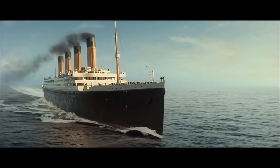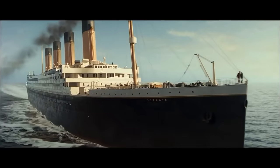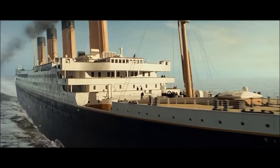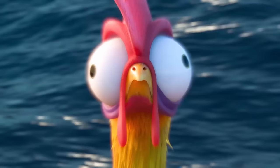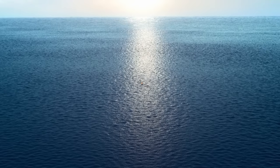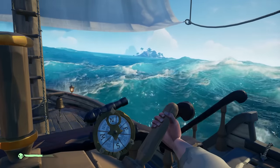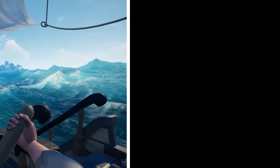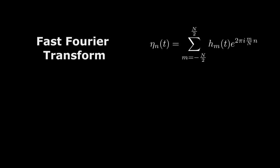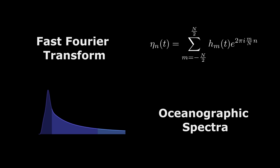Some time ago I read an article about ocean wave simulation in the movies Titanic and Waterworld by Jerry Tessendorf. Their approach has become a standard for rendering ocean surfaces in film and is often used even in video games. It has two key components: fast Fourier transform and oceanographic spectra. In this video I'm going to walk you through the basics of this technique and its implementation in Unity.